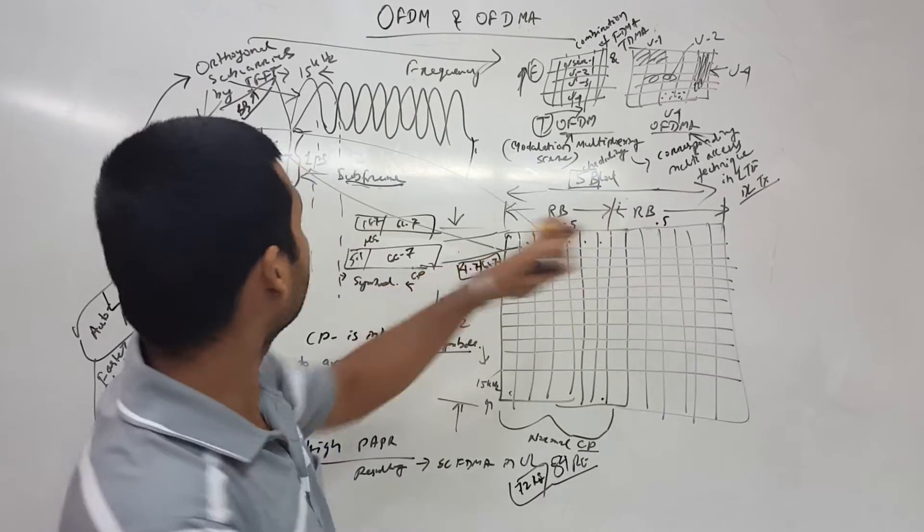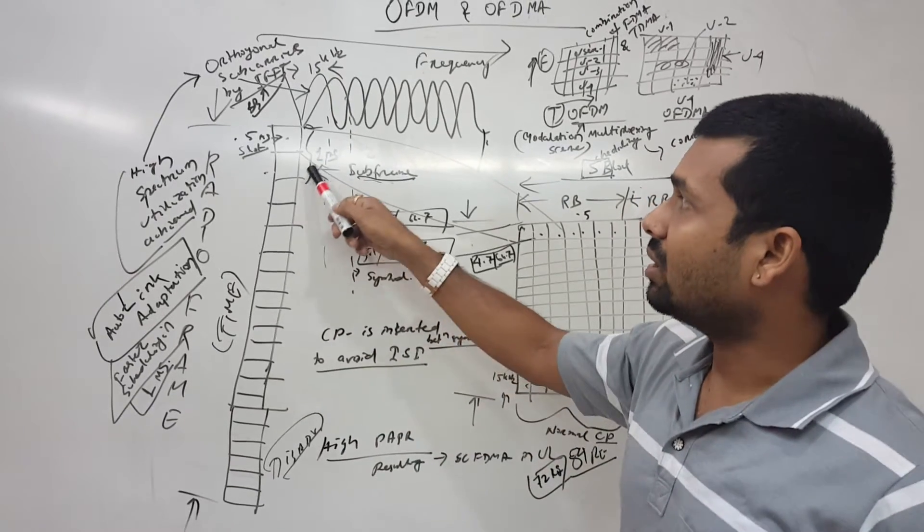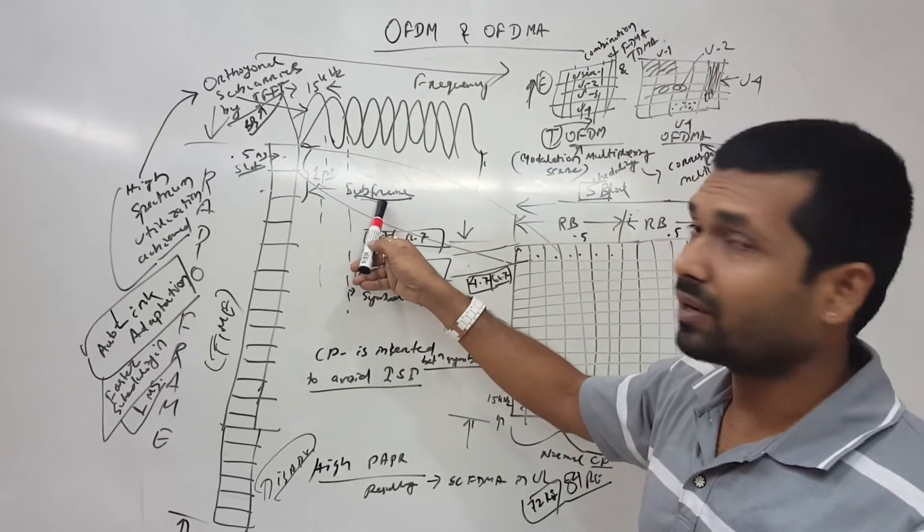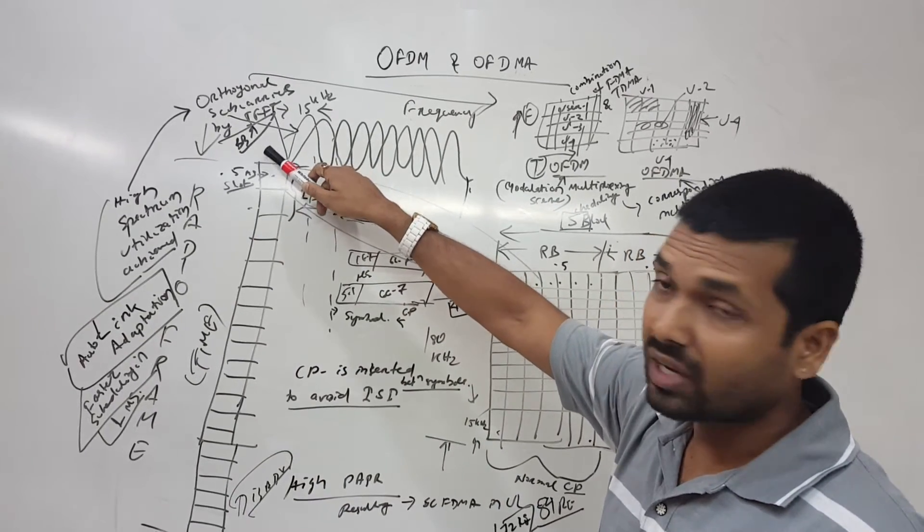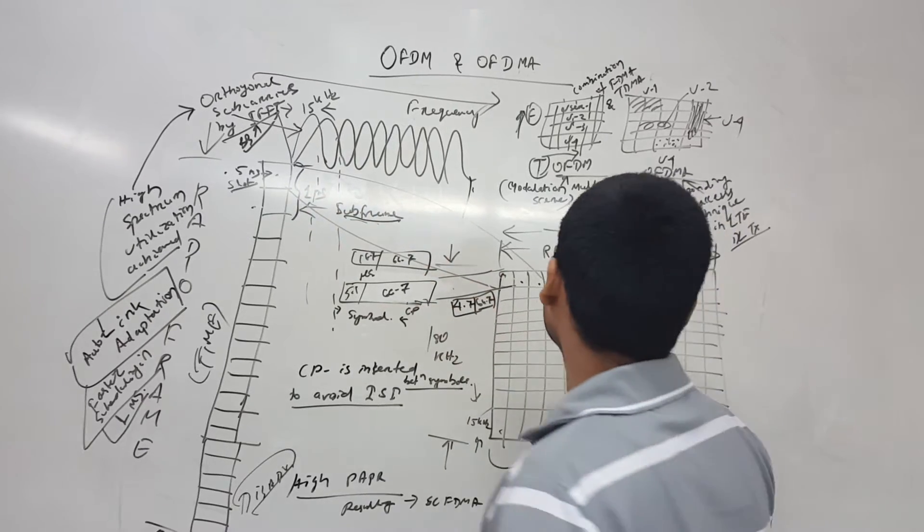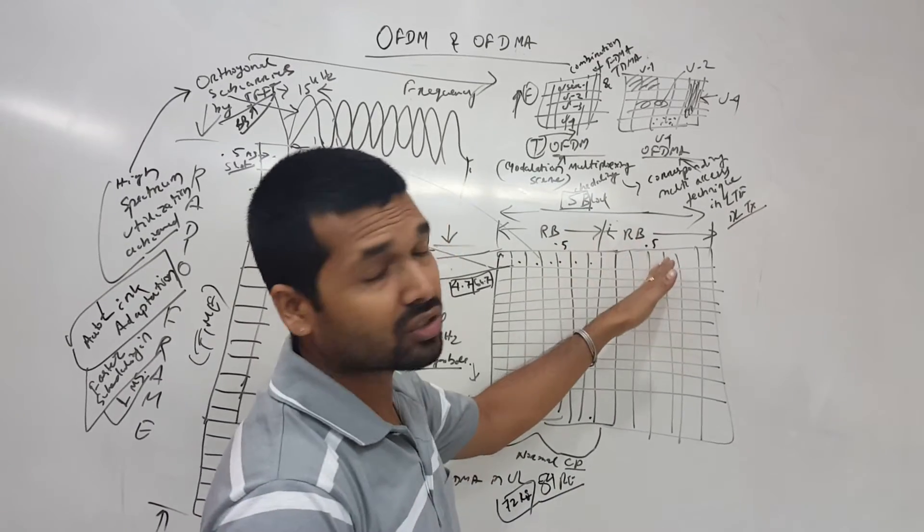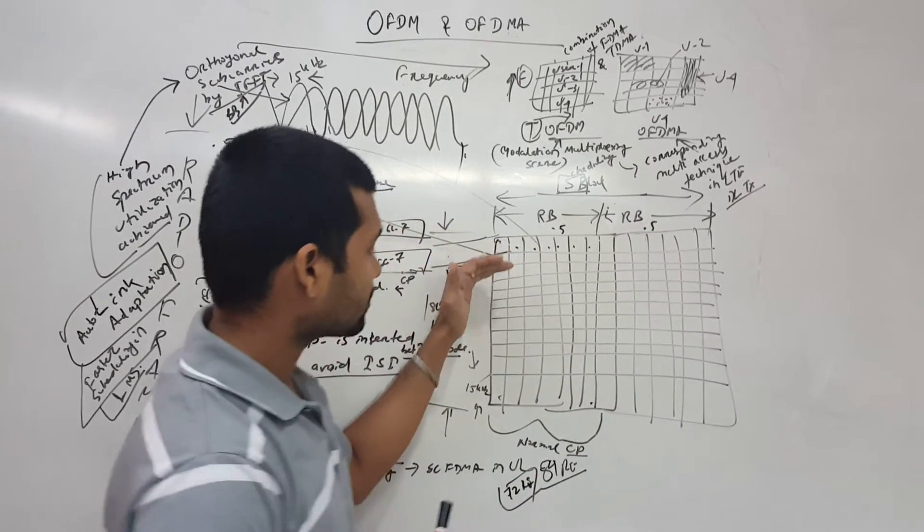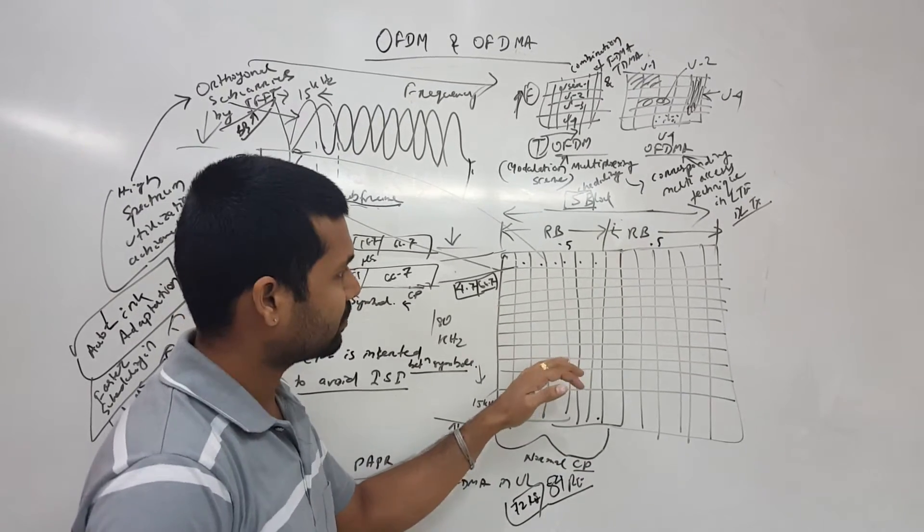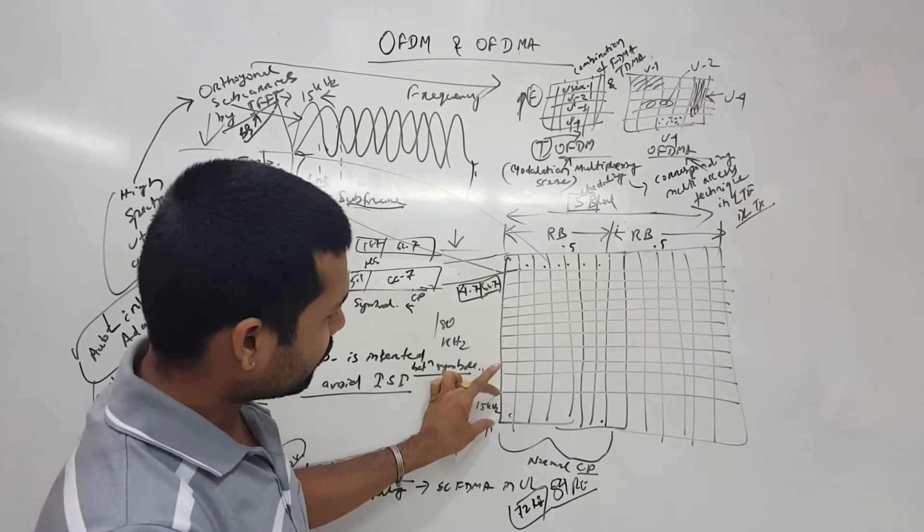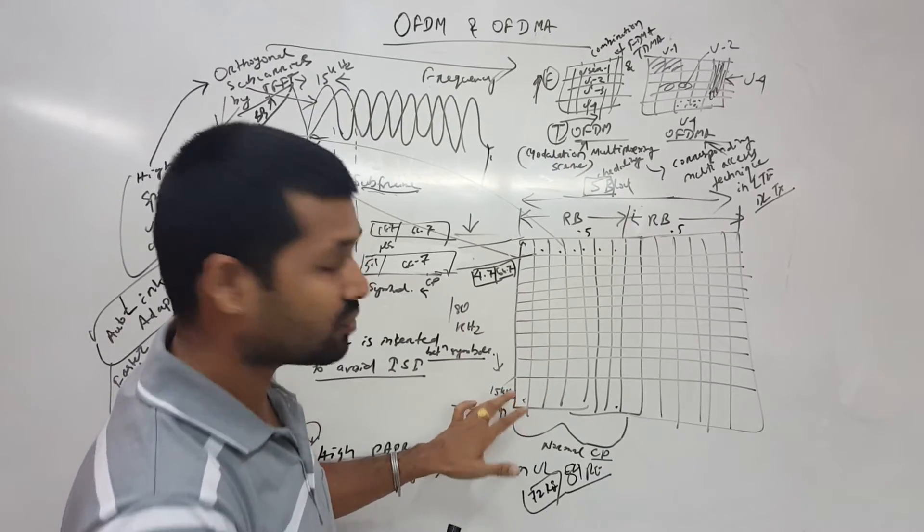Each having 0.5 milliseconds as I have explained here. Two 0.5 millisecond slots make a 1 millisecond subframe, and ten 1 millisecond subframes make 1 radio frame of 10 milliseconds. Our scheduling block is 2 resource blocks having 0.5 and 0.5 milliseconds, and it depends what cyclic prefix we are using when it comes to symbols.